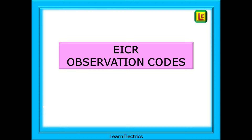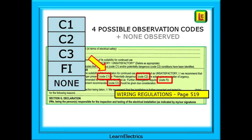We can begin with a reminder about the different EICR observation codes. You must understand how these are structured to have any chance of selecting the correct codes. There are 4 possible observation codes plus a state of non-observed. These are shown here and they also appear on the EICR reporting sheet, which you will find on page 519 of the Brown Wiring Regulations book.